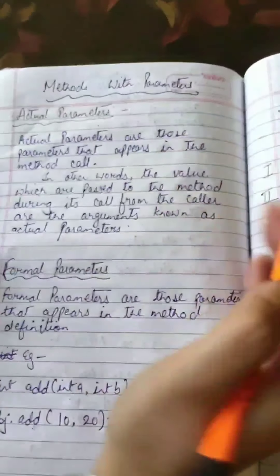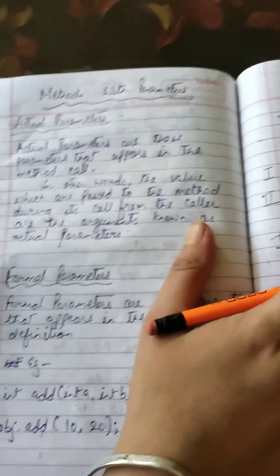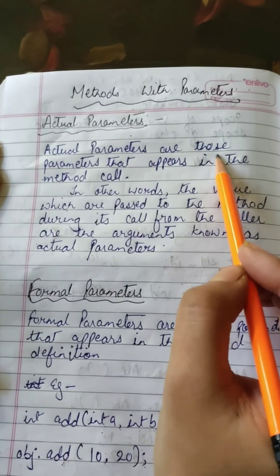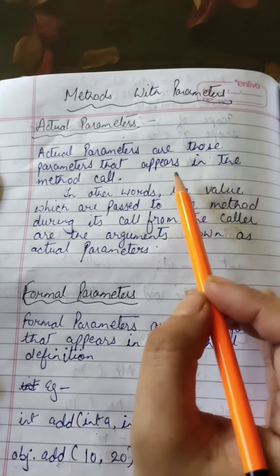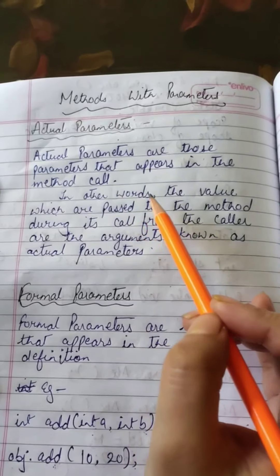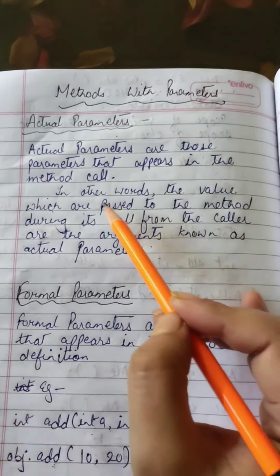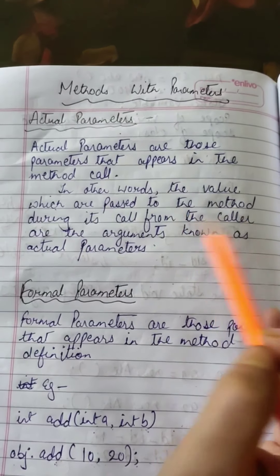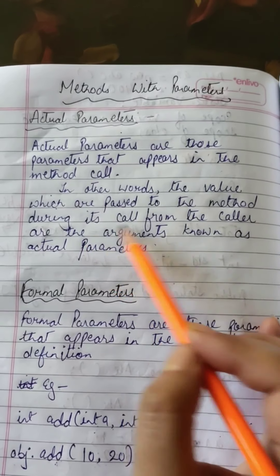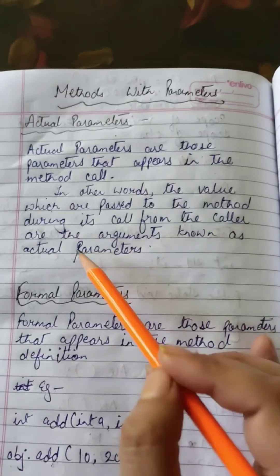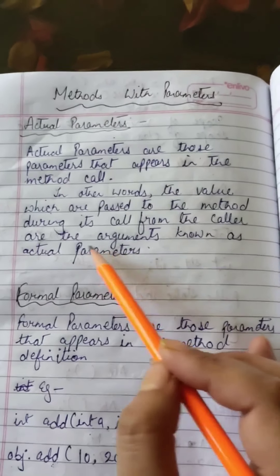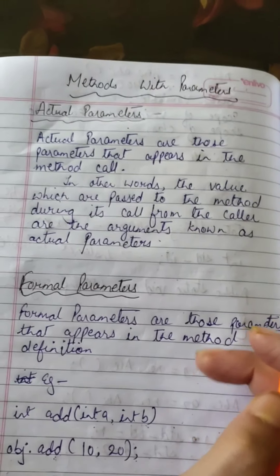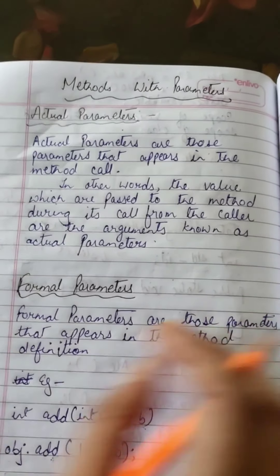Let's discuss actual parameters and formal parameters. Actual parameters are those parameters that appear in the method call. In other words, the values which are passed to the method during its call from the caller are known as actual parameters.